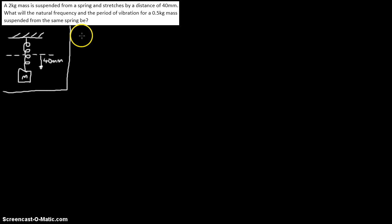Let's start by writing down what we know. We know that when our mass is equal to 2kg, our displacement, which I'll denote using this Greek symbol here, is equal to 40mm. Now, we want to find out when our mass is equal to 0.5kg,